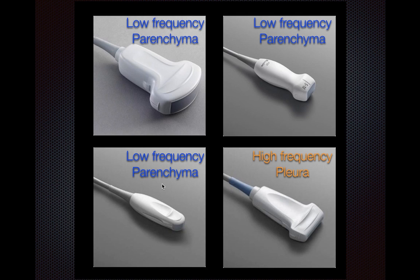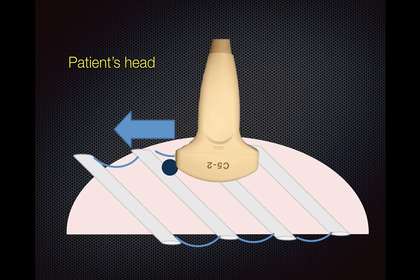If you are only interested in the pleural line, the high-frequency transducer is reasonable. However, if you want to look at the parenchyma and beyond, you should use a low-frequency transducer. For most trainees starting out, we highly recommend the curvilinear or abdominal probe, primarily because it allows you to image and identify key landmarks much more easily. The micro-convex is also not commonly available in many institutions.